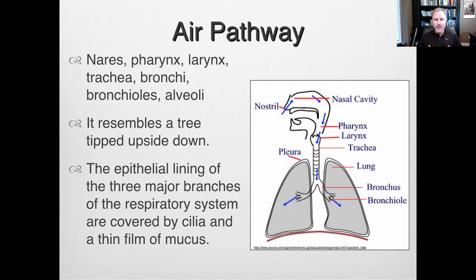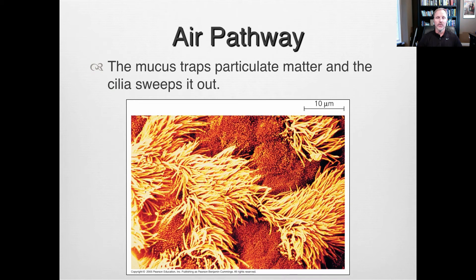The main branches of the respiratory system are covered with cilia and mucus so that they can trap things we're breathing in and sweep them out, with the help of the immune system, to keep us healthy. The mucus traps particles and pathogens, and then the cilia beat in a direction to force it up and out so we can cough it out or blow our nose.